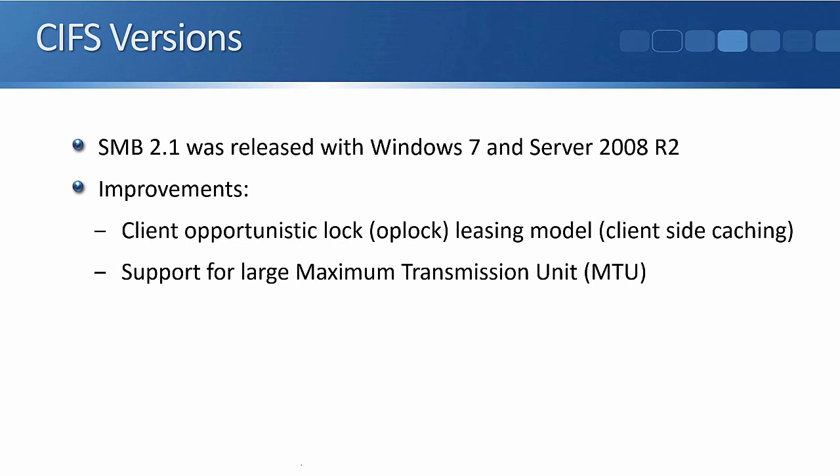SMB version 2.1 came out with Windows 7 and Windows Server 2008 R2. It has improvements over version 2.0 including client opportunistic locks — op locks — which is client-side caching. The client can cache information retained from the server, giving better performance. It also supports larger MTU maximum transmission unit sizes.